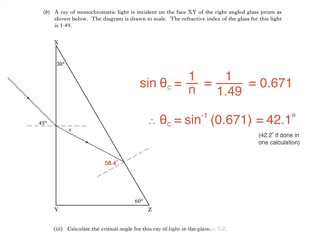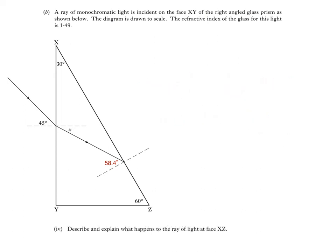Finally, part 4 asks us to describe and explain what happens to the ray of light at face XZ. So of course, because the angle of incidence in glass, 58.4 degrees, is greater than the critical angle, which we found in B part 3, the ray is totally internally reflected at an angle of 58.4 degrees.